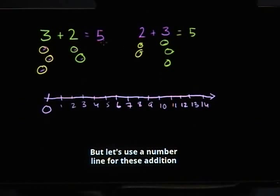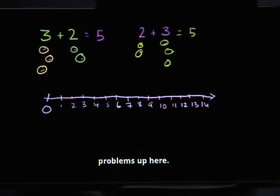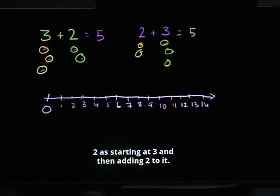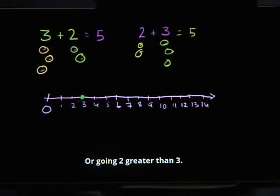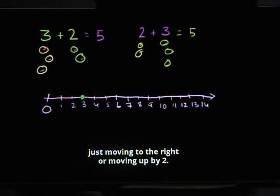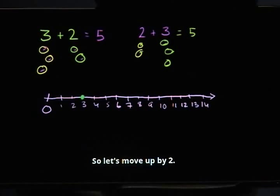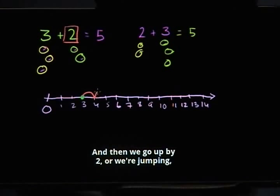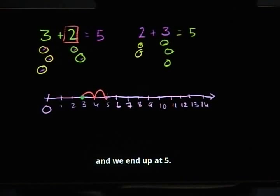But let's use the number line for these addition problems up here. So in the last video, just as a bit of a review, you can view 3 plus 2 as starting at 3 and then adding 2 to it, or going 2 greater than 3. And just going greater or adding on the number line is just moving to the right or moving up by 2. So we go up by 1, and then up by 2, and we end up at 5, which is exactly what we got before.